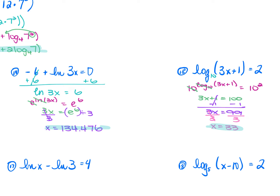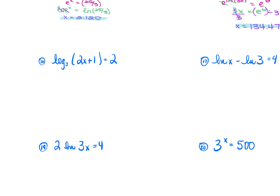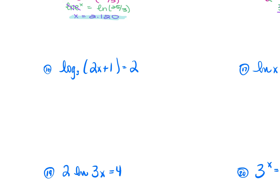You can plug these answers in and check using your calculator. Remember, if your log has a base other than 10, you can't use the standard log button for checking. For number 16: log₃(2x + 1) = 2. Base is 3, so raise 3 to both sides: 3^(log₃(2x+1)) = 3². The 3 cancels the log₃, leaving 2x + 1 = 9. Subtract 1: 2x = 8. Divide by 2: x = 4.